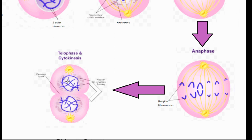Finally, we have telophase, where a nuclear membrane starts forming around these chromatids and the chromosomes basically start unwinding. After that we have cytokinesis, where the cell basically splits into two.